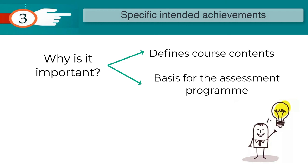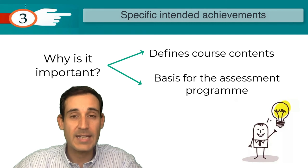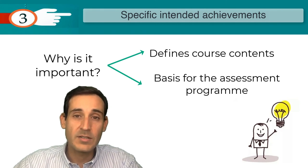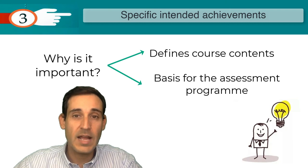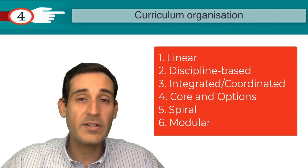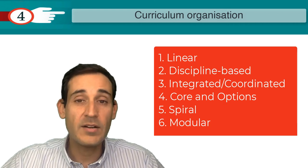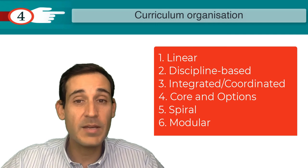So the question to you again: how is the graduation profile and learning outcomes expressed in your programs? Once the purpose and expected outcomes have been defined, the curriculum must be written, showing how the contents will be organized and how the curriculum will be structured. We will go through six different types of curriculum design, which in general are not mutually exclusive and may be combined.